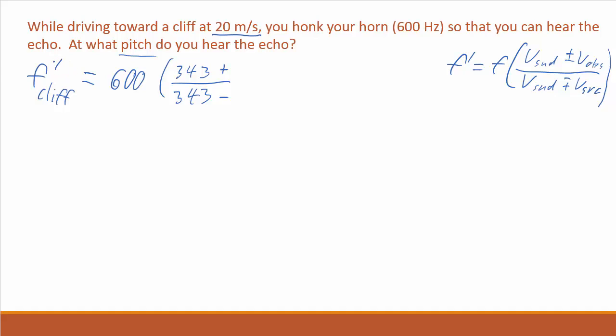we want the velocity of the observer. In this case, that's the cliff. The cliff is not moving relative to the air. Now, the velocity of the source is your car. So that's 20. Plug all this stuff in. And the sound wave that hits the cliff has a frequency of 637 hertz.